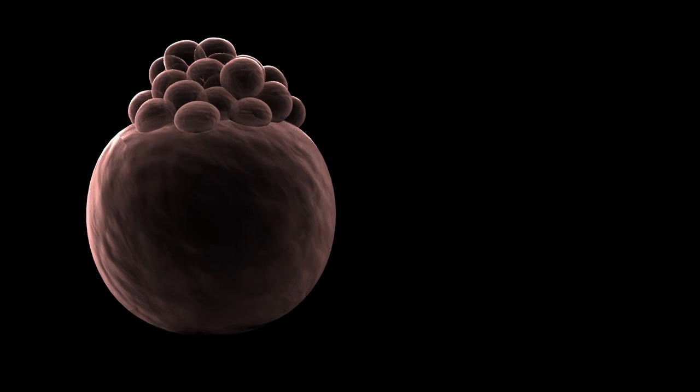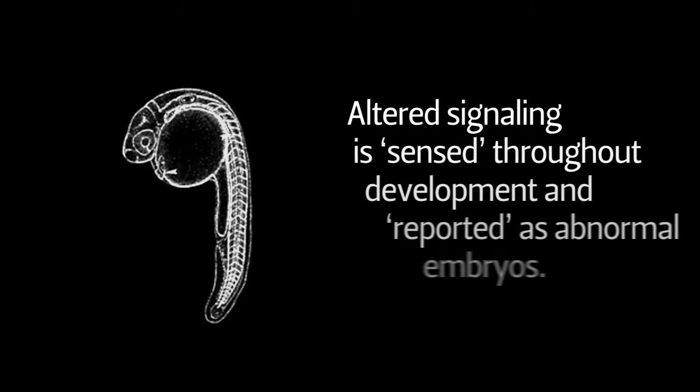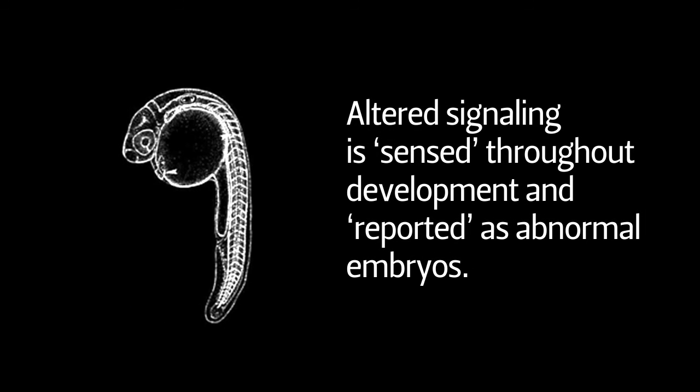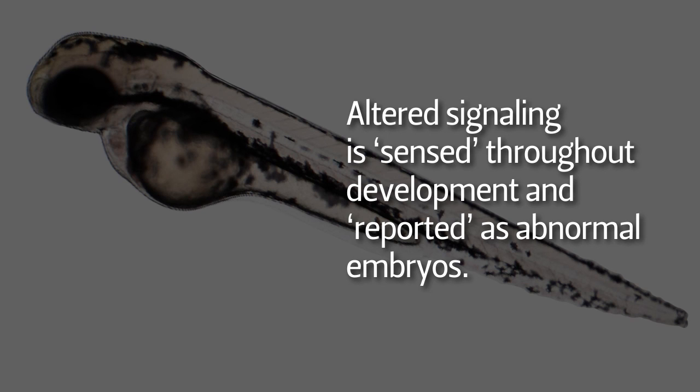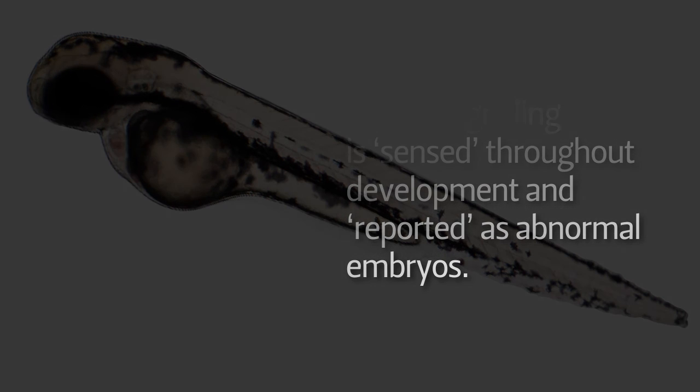So we now see how the biosensor works. Development presents essentially every potential target and network that organisms have. So ultimately, if chemical exposures sufficiently alter signaling networks, it is sensed throughout development and reported by producing abnormal embryos.